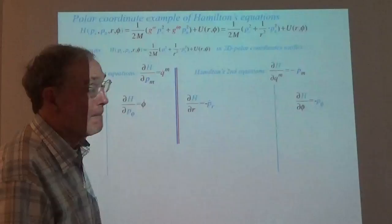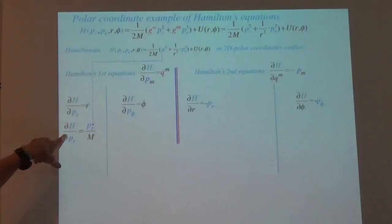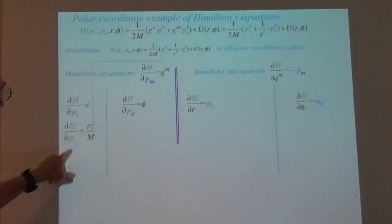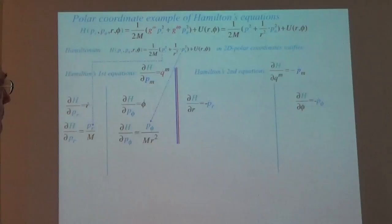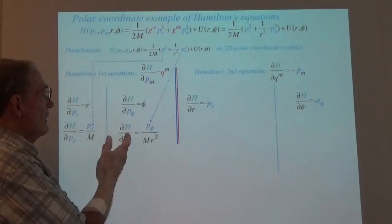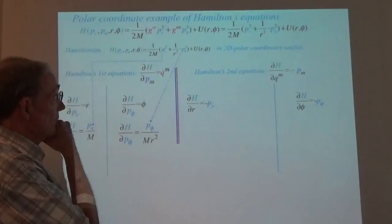Here we look at R-dot and say, I know what that is — that's P_R over M. So there is one result that checks out. That's the radius, essentially like a one-dimensional X. And then you look at the angular part and see this one: the partial derivative of H with respect to this gives P_phi over M R-squared.